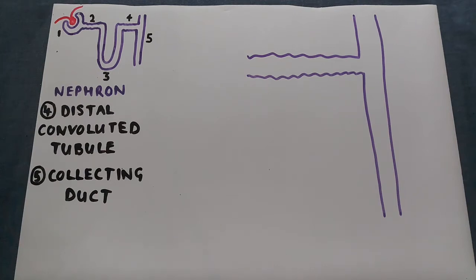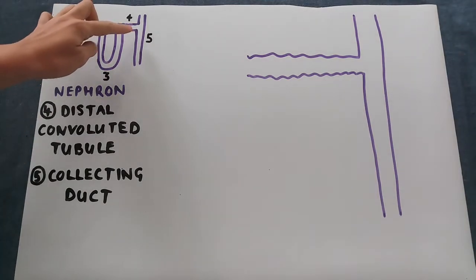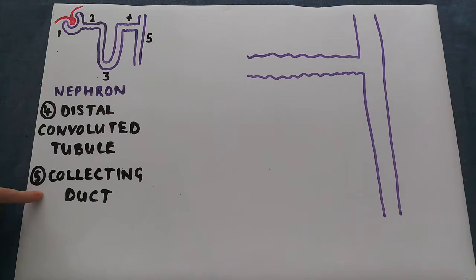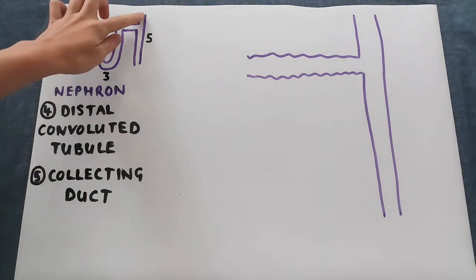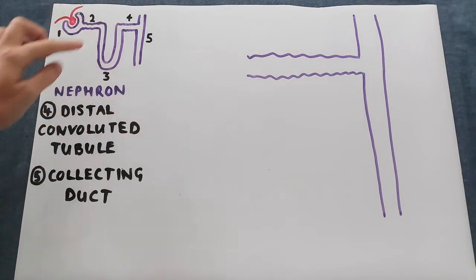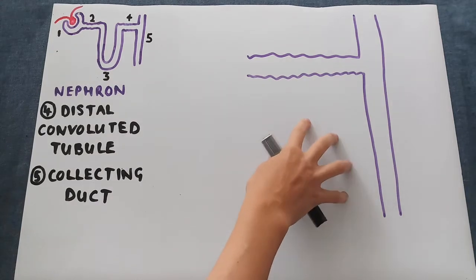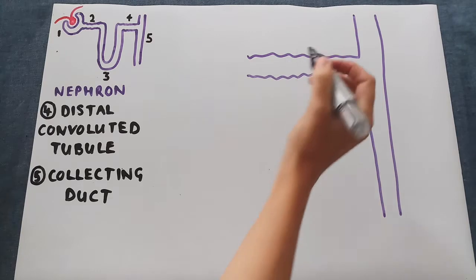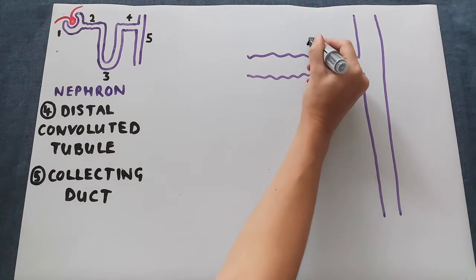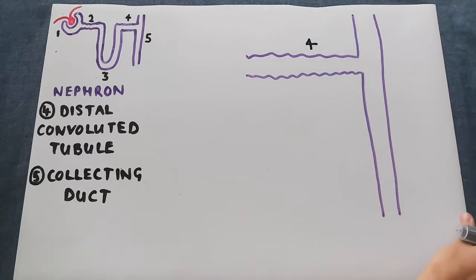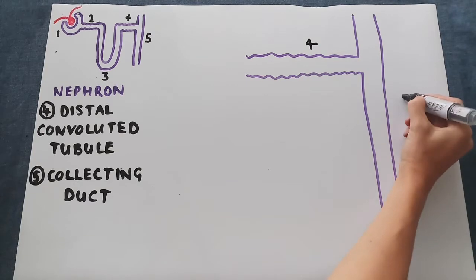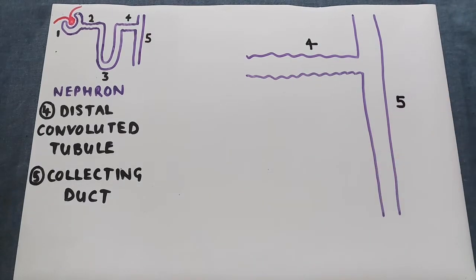In this video we're going to look at the last two sections of the nephron. Number four is the distal convoluted tubule, which is the section after the loop of Henle. And number five is the collecting duct, which comes after the distal convoluted tubule. I've drawn the two in a more zoomed-in version here — the wiggly bit is number four, the distal convoluted tubule, and this part is the collecting duct, number five.